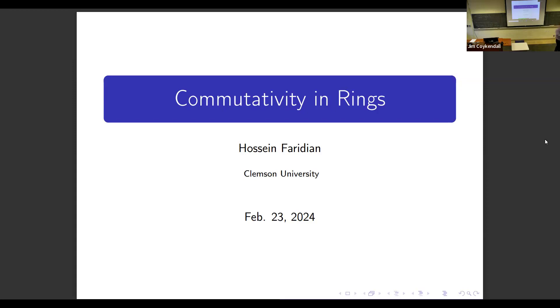So if you multiply two elements a and b, ab may not be equal to ba. What rings do we know? The ring of integers — this is a commutative ring.